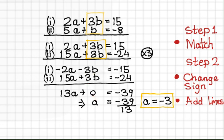Now we have one unknown 13a. We can solve simple algebra. Divide across by 13 and we get a result of a is equal to minus 3.